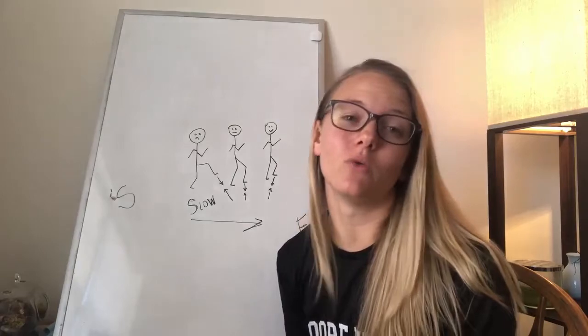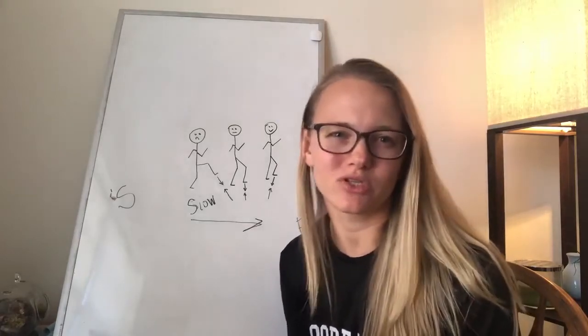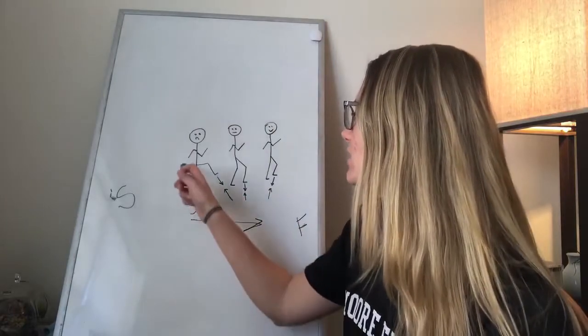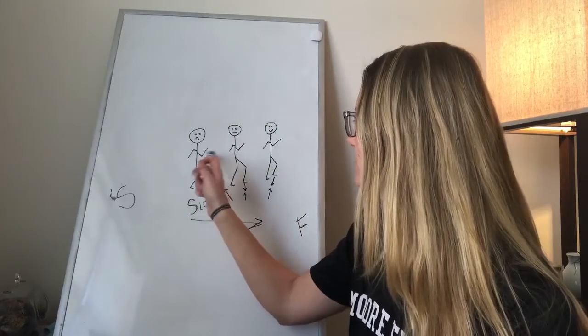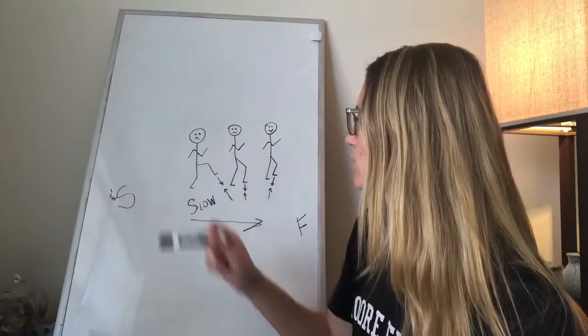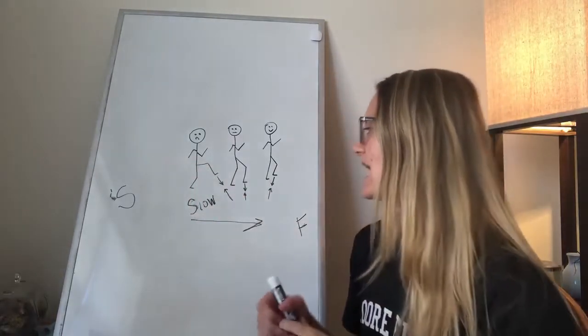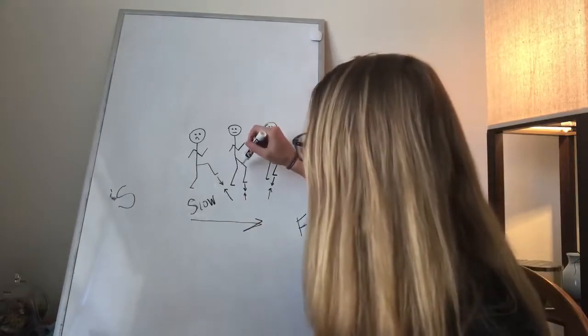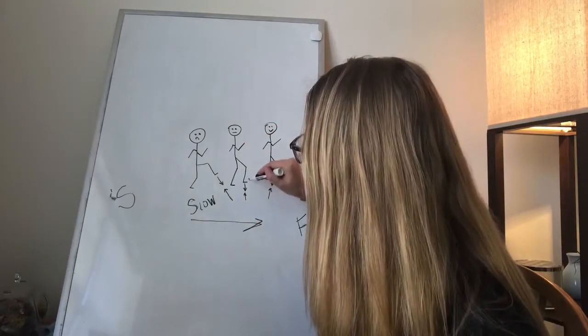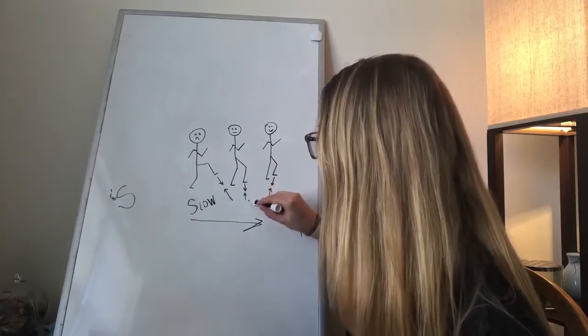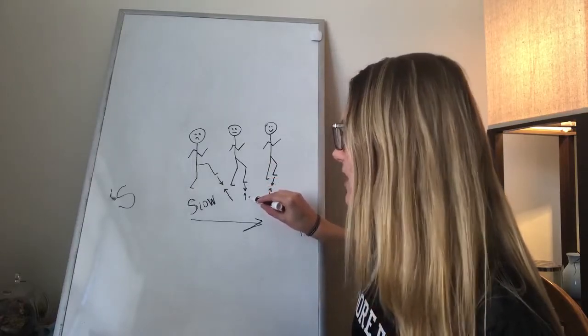Your second reason why you don't want to overstride is the demands it puts on your hamstrings. So when you put this foot down here, the only thing that's going to pull those hips forward is your hamstrings. So this guy in the center, even though he's bringing his foot down better, so he's not really decelerating a whole lot...